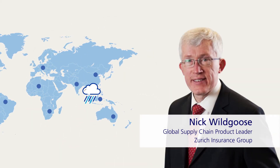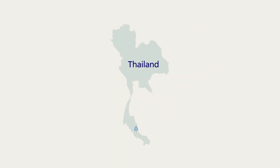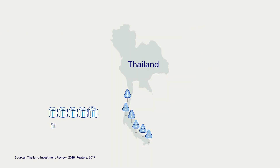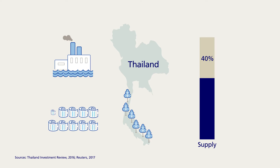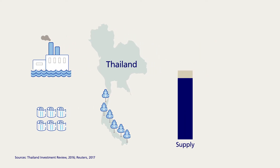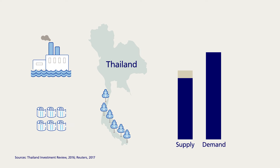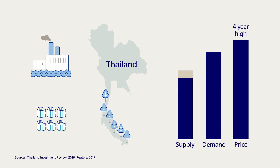Let's take Thailand as an example. The country is the world's largest producer of rubber, accounting for 40% of global output. In January 2017, floods struck rubber farms, stopping production and creating a global shortfall. As demand outstripped supply, the global price of rubber hit a four-year high.